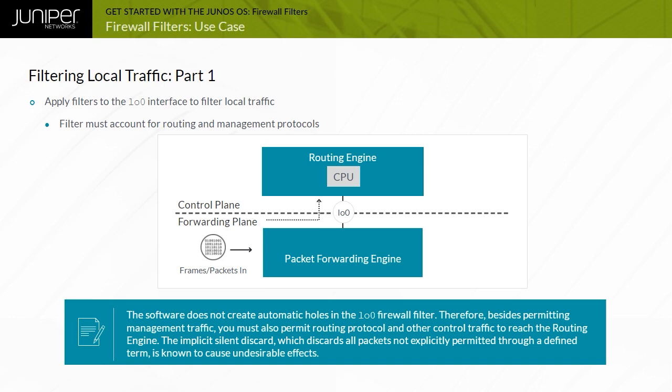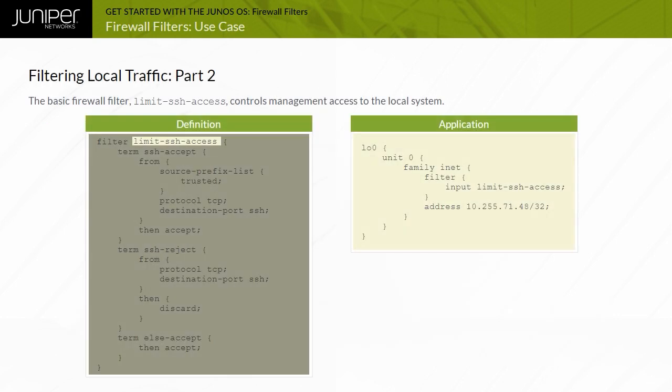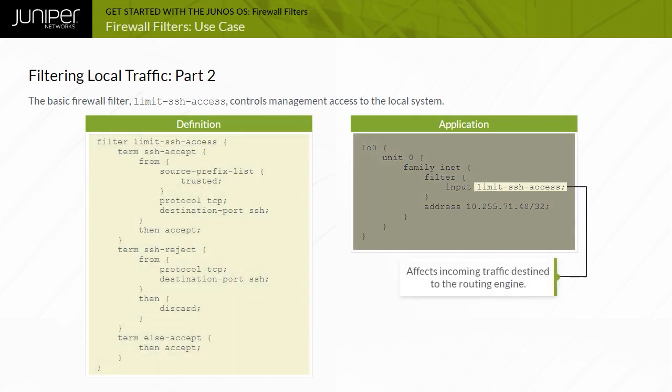The implicit silent discard, which discards all packets not explicitly permitted through a defined term, is known to cause undesirable effects. Consider the basic firewall filter named Limit SSH Access, which controls management access to the local system. The software applies the filter to the LO0 interface as an input filter and evaluates all incoming traffic destined to the routing engine.